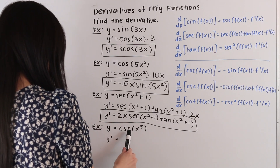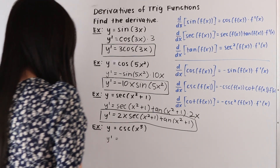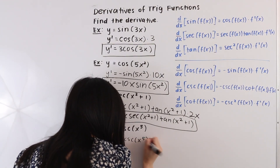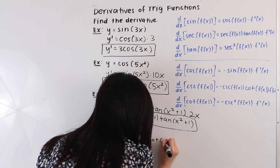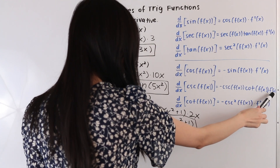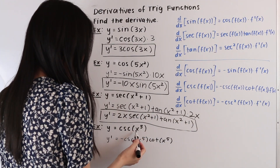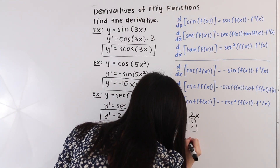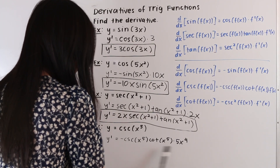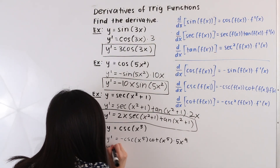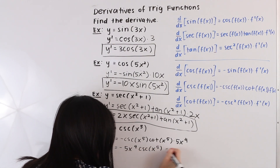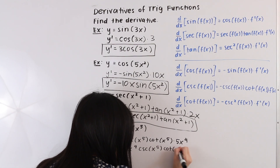So let's go ahead and start off by taking the derivative of this trigonometric part here, keeping the angle the same. So we have negative cosecant of x to the fifth times cotangent of x to the fifth. And then we're going to multiply by the derivative of our angle. So the derivative of x to the fifth is equal to 5x to the fourth. And as our last step, let's go ahead and move this term out in front. So we have y prime is equal to negative 5x to the fourth times cosecant of x to the fifth times cotangent of x to the fifth.